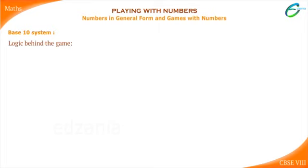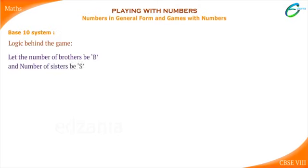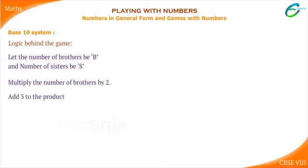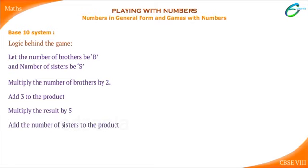Let us understand the logic behind this game. Let the number of brothers be B and the number of sisters be S, and follow the instructions given by Manoj: multiply the number of brothers by two, add three to the product, multiply the result by five, then add the number of sisters to the product. Finally we get the equation in the form: (2B + 3) × 5 + S.